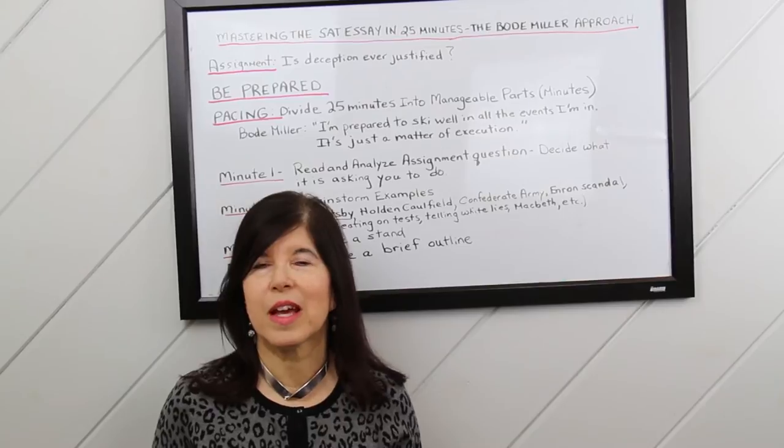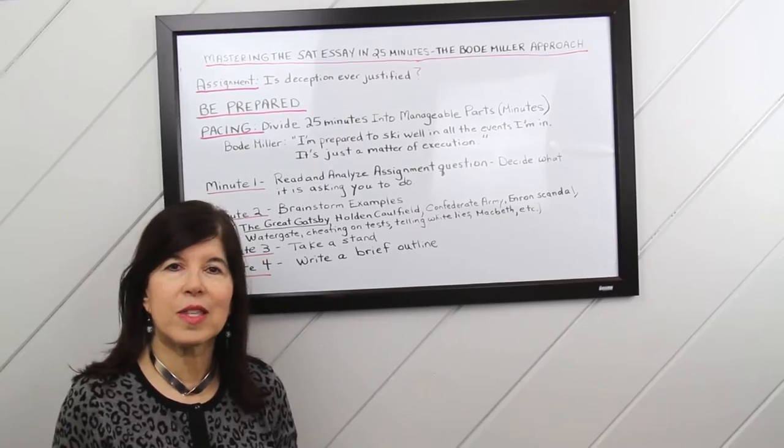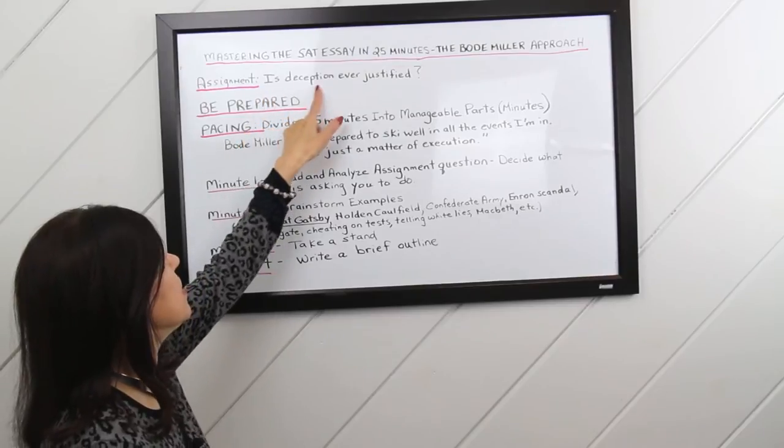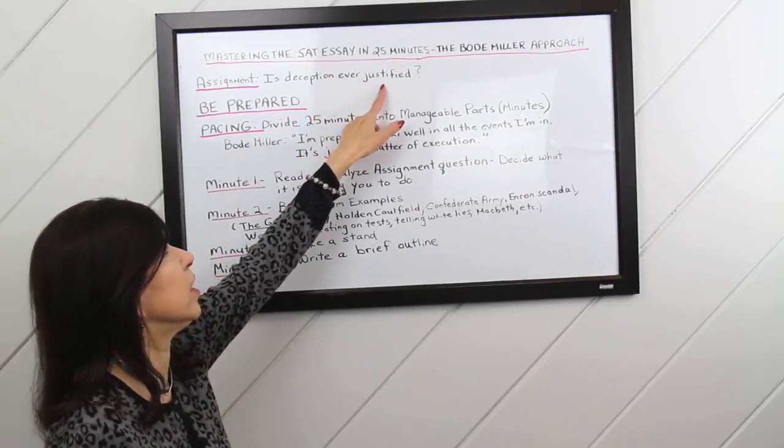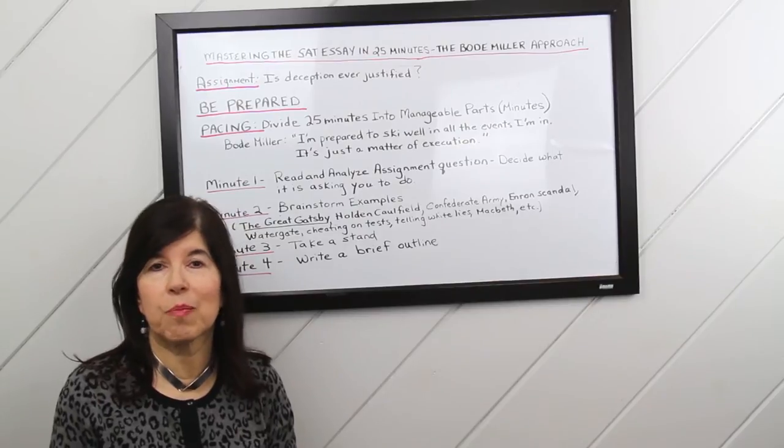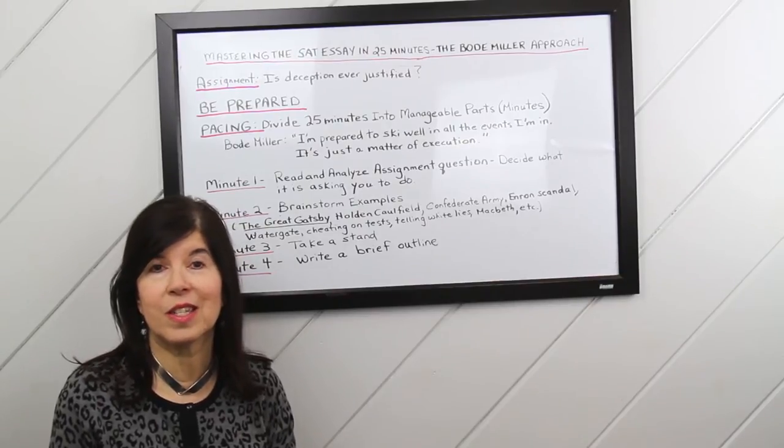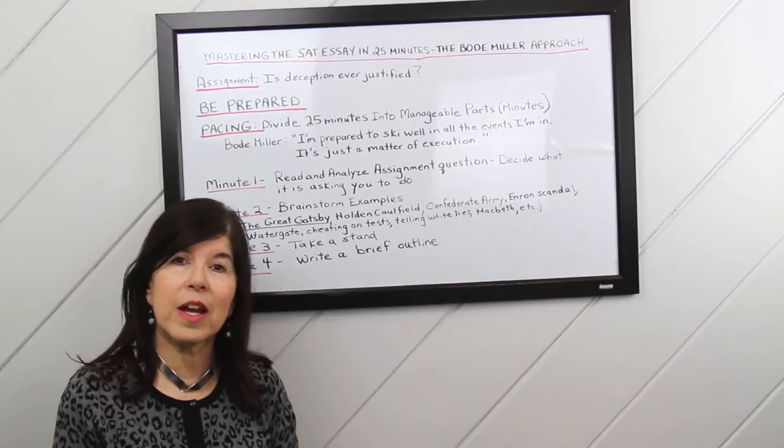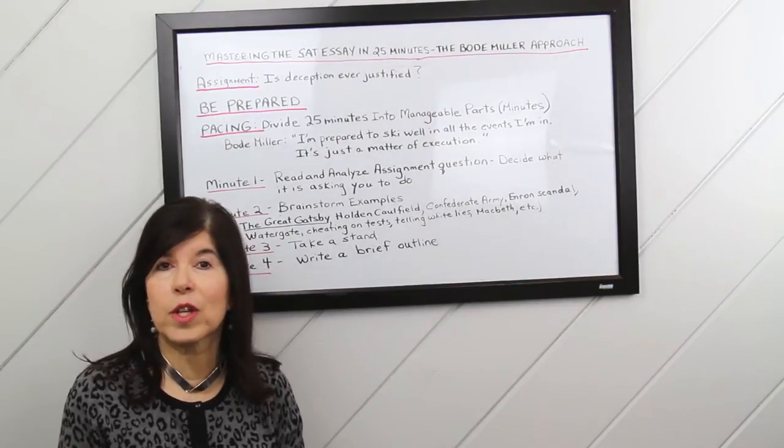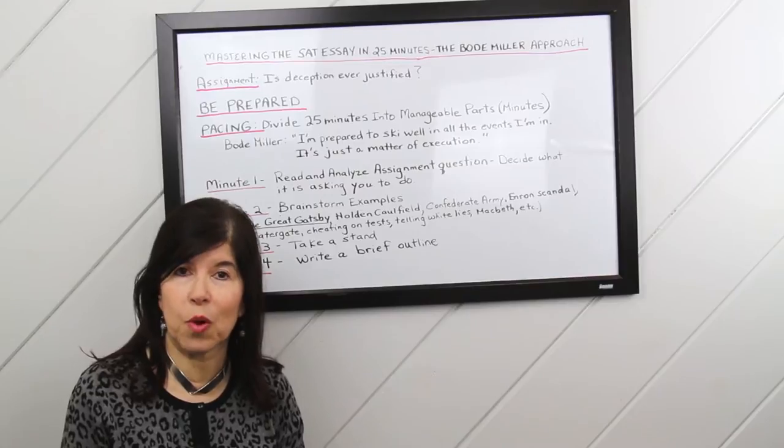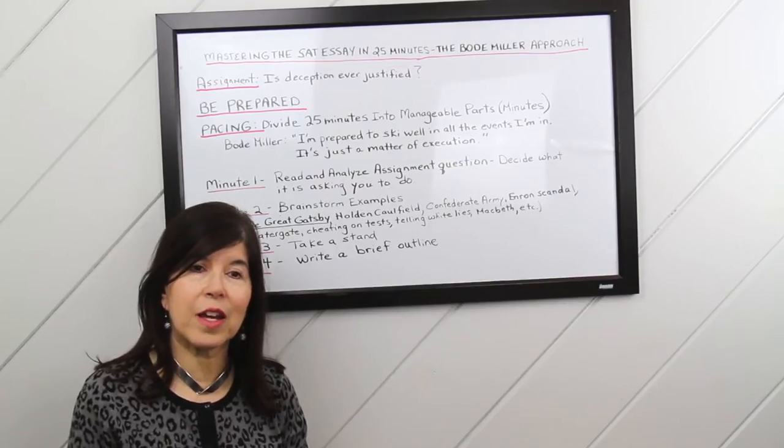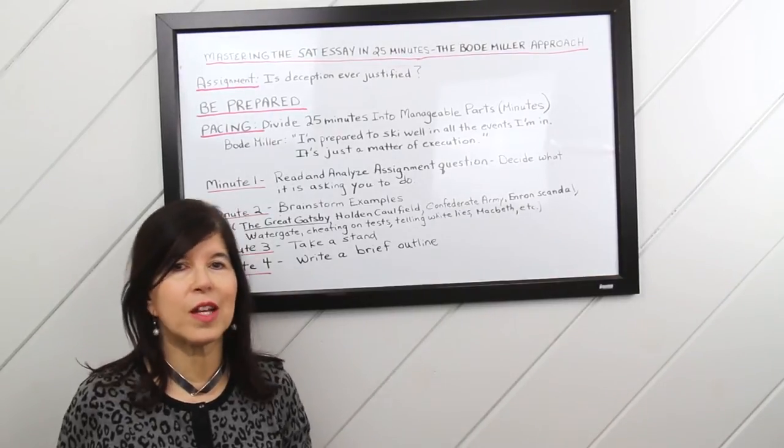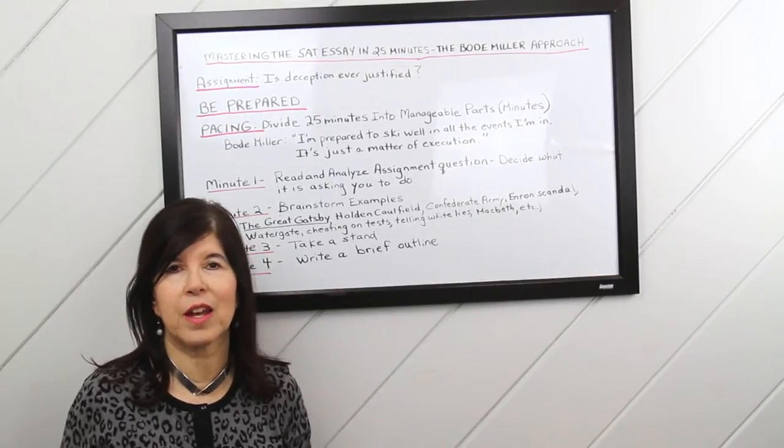Let's look at a typical essay question. A typical SAT question might be something like, is deception ever justified? And you'd be expected to respond with examples from your reading studies, personal observations, and experiences. Every SAT essay has a question with an excerpt before it. This particular question had an excerpt from a book called The Truth About Lying, and it talked about two sides of the coin, deception and honesty.